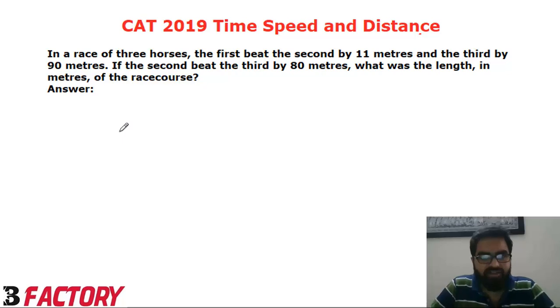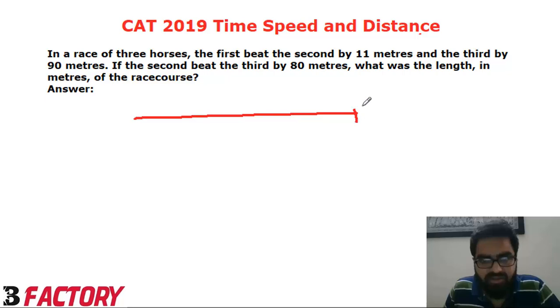So we are given that three horses, first one beats the second. Let me do the figure first. So first race, the first one is here, second one is here, and third one is 79. This total is 90.